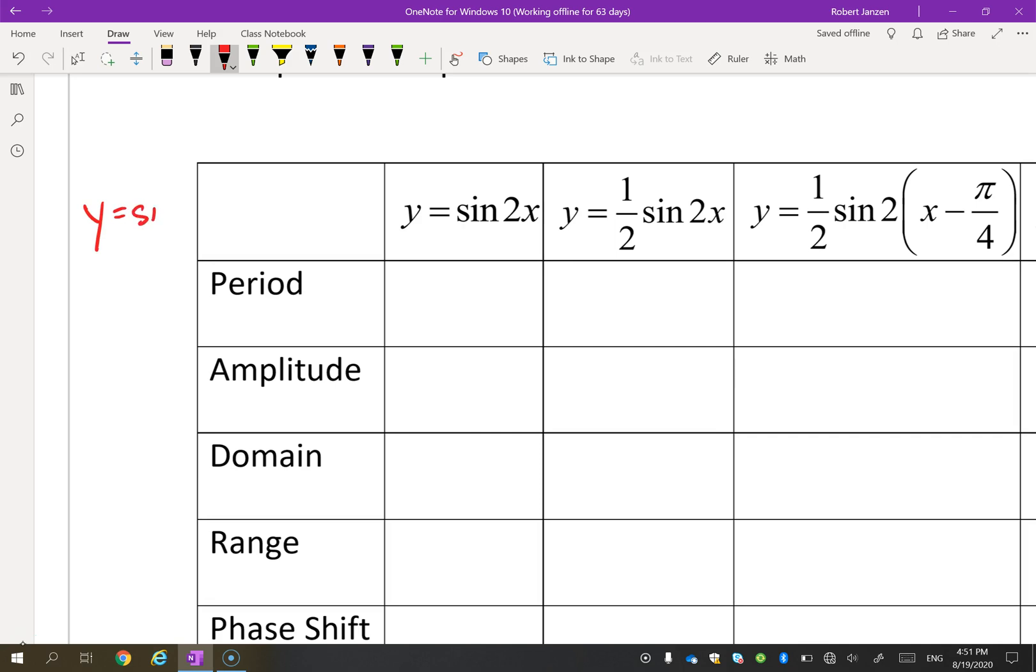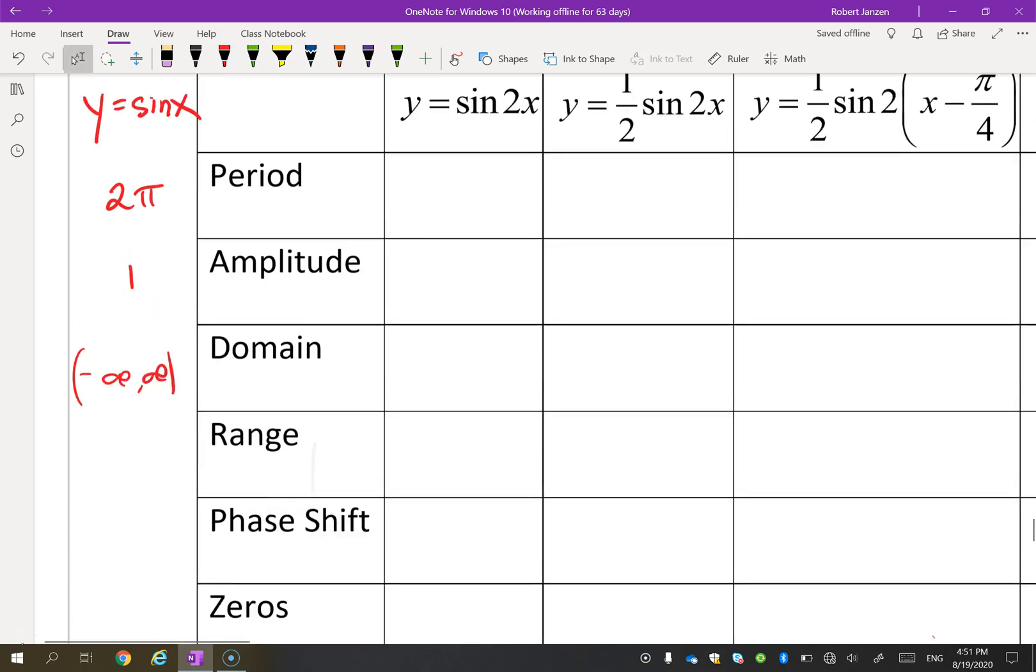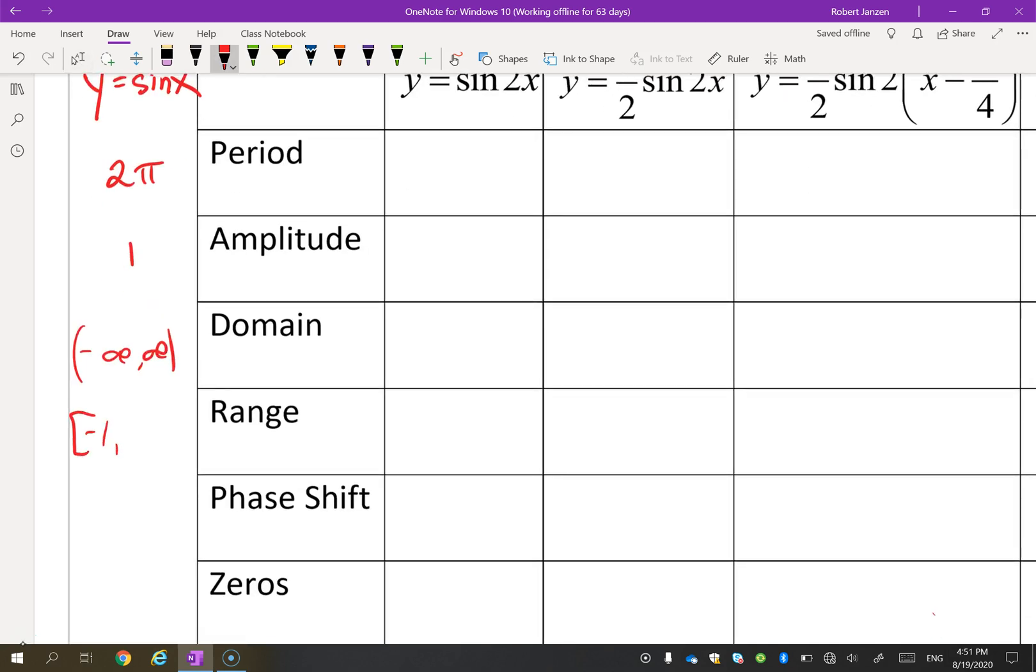Very quickly, before we look at some transformations, let's recall the sine function. Remember, the period is 2π. The amplitude is 1. The domain is negative infinity to infinity. The range is from negative 1 to 1. And the phase shift, there is none right now, because the original sine graph starts right here. That's where the sine graph starts.